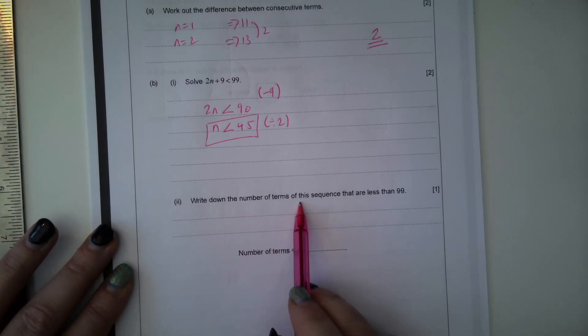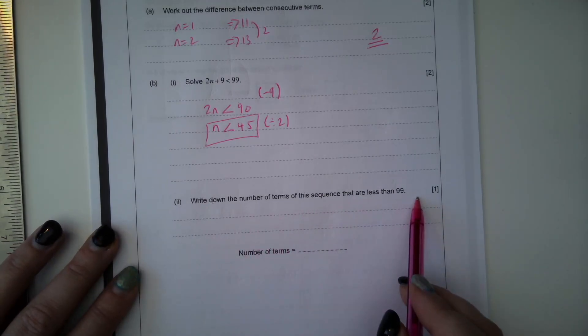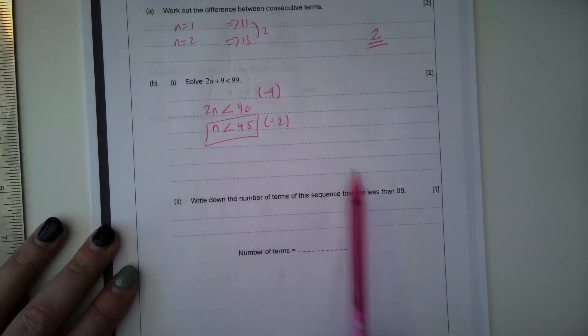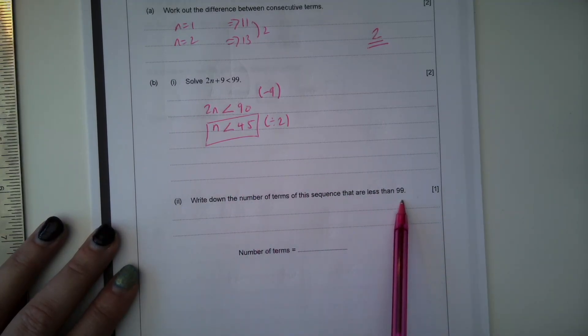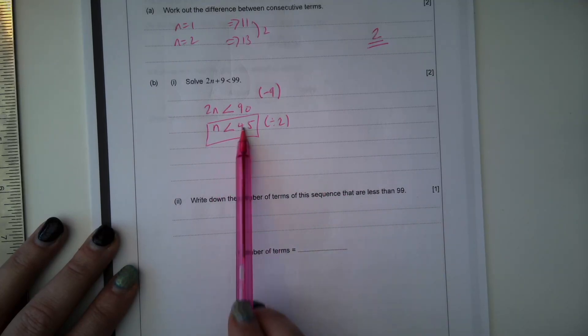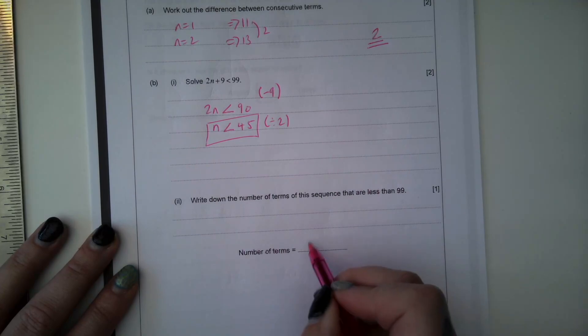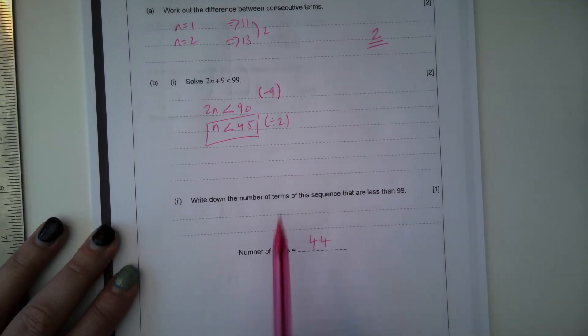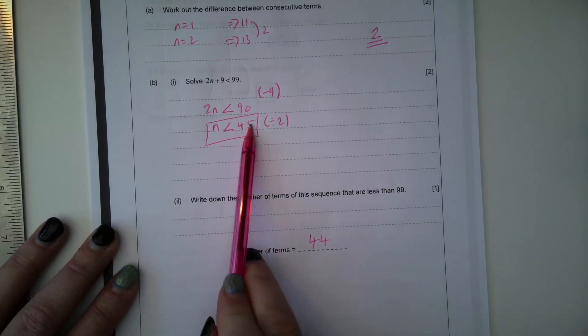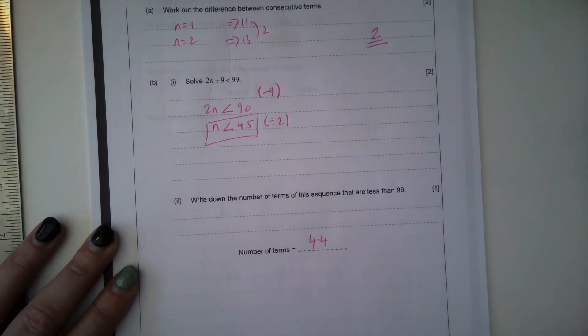Write down the number of terms of this sequence that are less than 99. Okay. So the number of terms in this sequence that are less than 99. n is less than 45. So there will be 44. Because we can't have that. This is the number of terms. We can't have 45 terms because it's less than 45. So it's going to be 44.